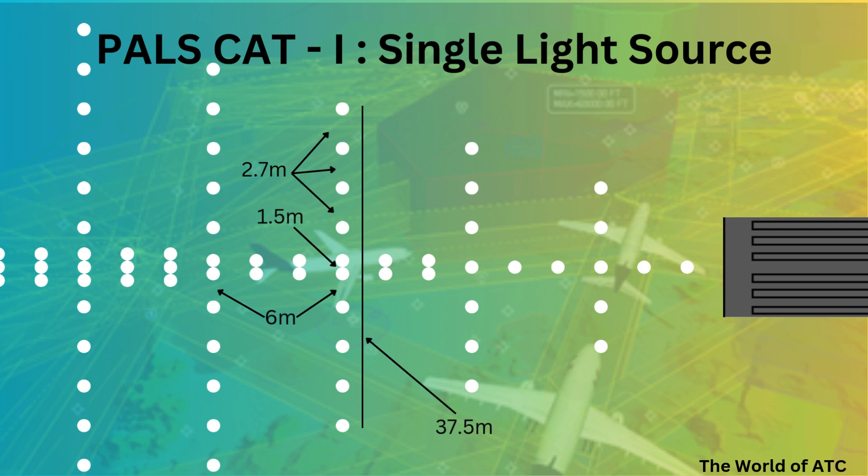The third crossbar will have a length of 37.5 meters. The distance between the crossbar lights would be 2.7 meters, and the distance between the centerline lights and the crossbar lights would not be more than 6 meters in any case.